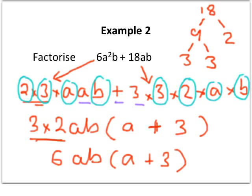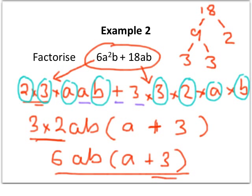So what we're saying here is 6a²b plus 18ab factorises to 6ab, then in brackets a plus 3.